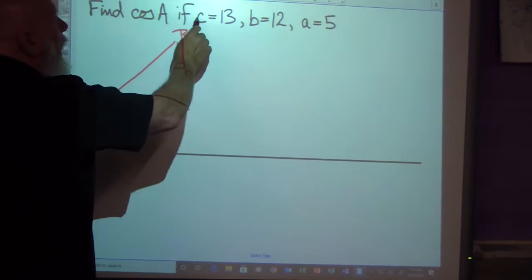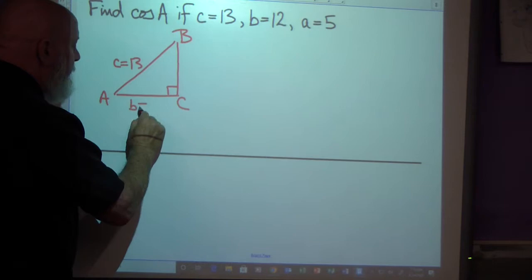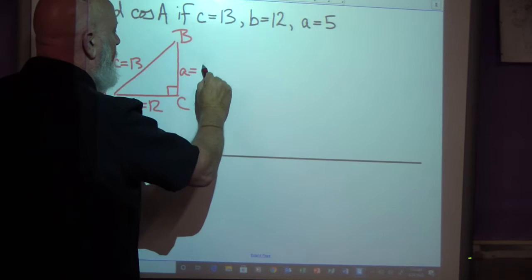I want C to be 13. So C opposite angle C is 13. I want B to be 12. So opposite angle B is side B which is 12. And opposite angle A is 5. A is 5.